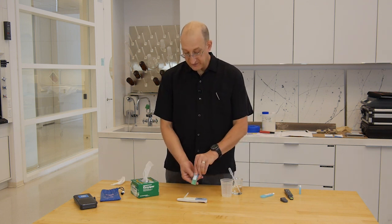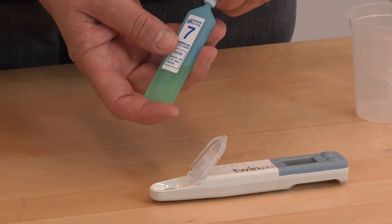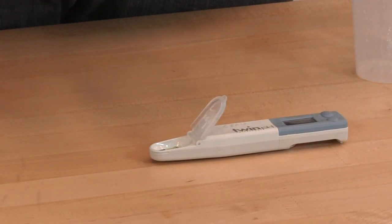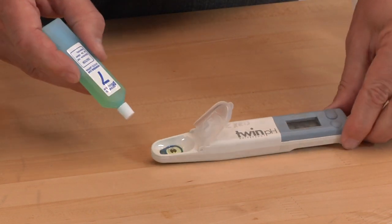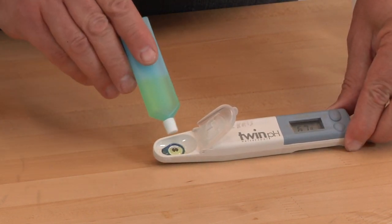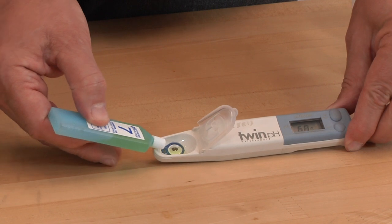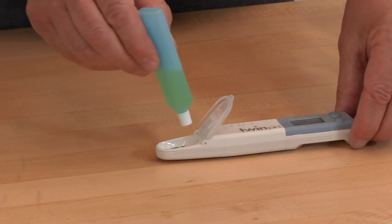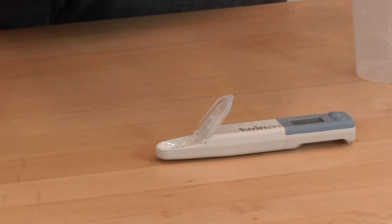We calibrate at pH 7 first with the calibration solution that came with the meter. We want to put enough solution in that we have both the reference electrode and the measuring electrode wet and connected by the liquid. So the measuring electrode is here. The reference electrode is that little white spot, and we want to have our solution connecting both.